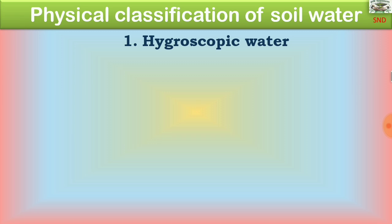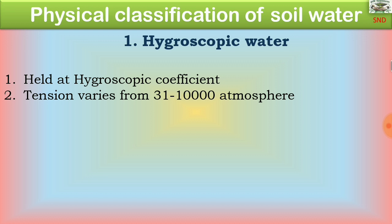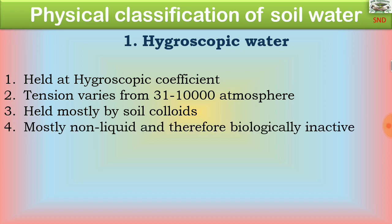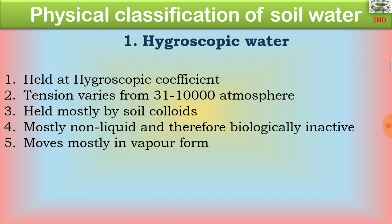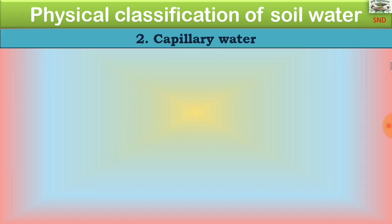In physical classification, the first type is hygroscopic water, held at the hygroscopic coefficient. The tension varies from 31 to 10,000 atmospheres, held mostly by soil colloids. It is mostly non-liquid and therefore biologically inactive. It moves mostly in vapor form, and is related to the texture and organic matter content of the soil.